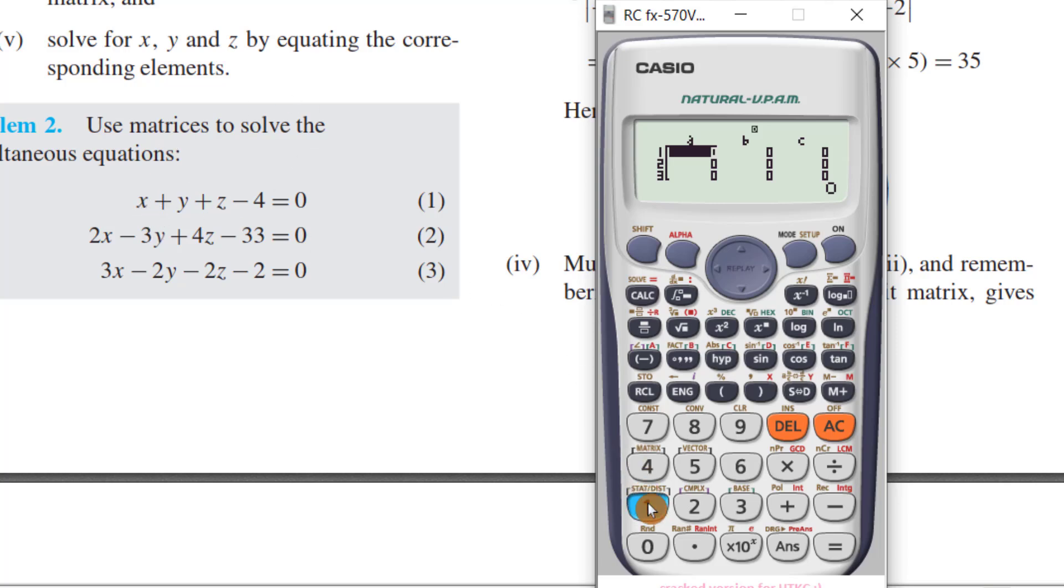For x, 1. For b, for the first equation, 1 also. For c or z, 1. You see here, minus 4. But we have to bring it for right-hand side. It will be 4. So, put 4.